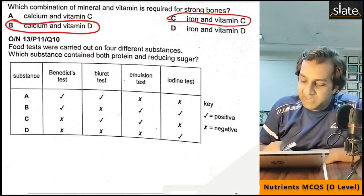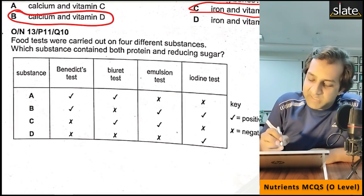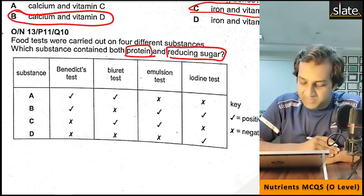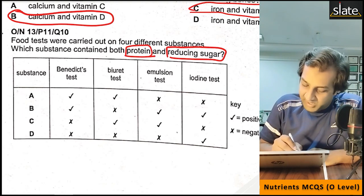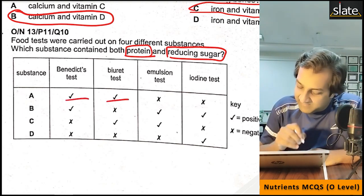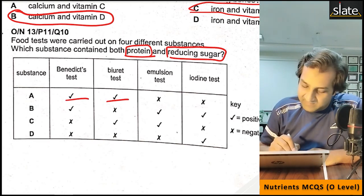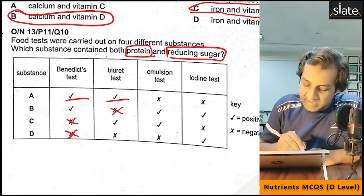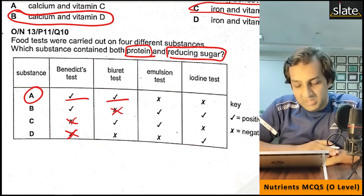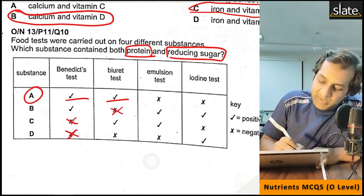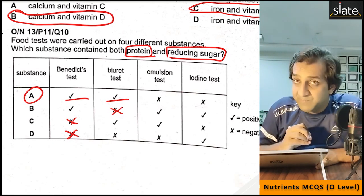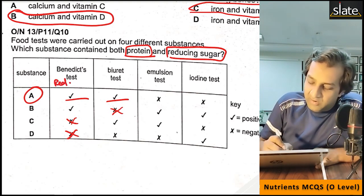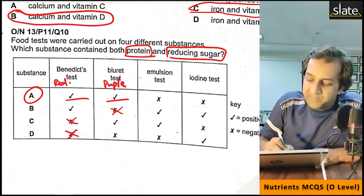Four substances are tested. Which substance contains both protein and reducing sugar? Substance A: reducing sugar — Benedict positive, Biuret positive, emulsion test negative. For the Benedict test, any color change from blue indicates reducing sugar; ideally it should be brick red. For the Biuret test, the color should be purple or violet.